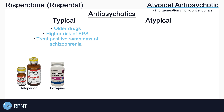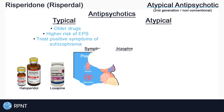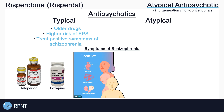Typical antipsychotics are used in the treatment of positive symptoms of schizophrenia, which are thoughts, feelings, or actions that are added onto a person's regular behaviors. Hallucinations and delusions are examples of positive symptoms of schizophrenia.